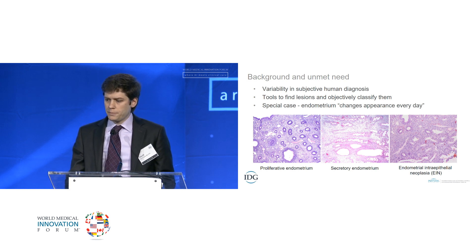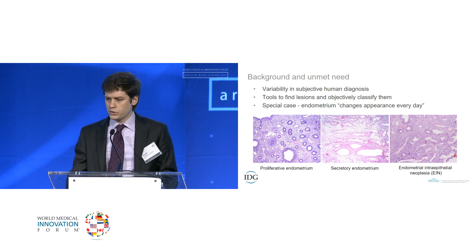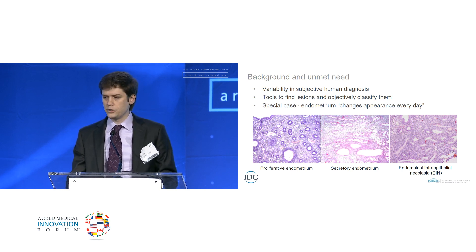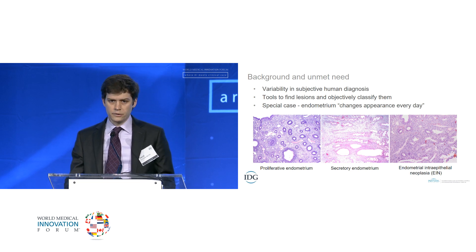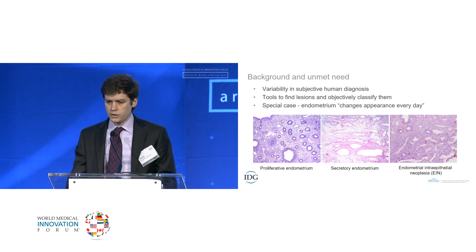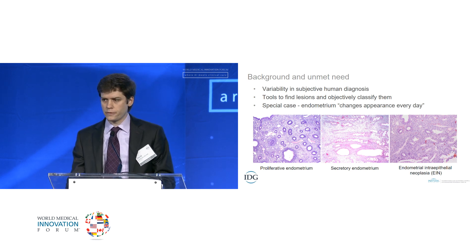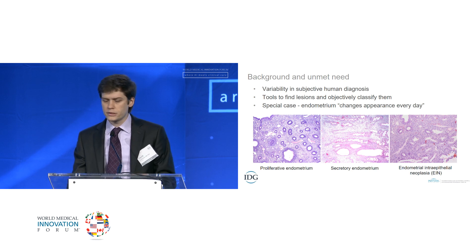This is the type of tool we set out to develop, and we chose as our model system the endometrium. The endometrium has a diagnosis — endometrial intraepithelial neoplasia — which is one of these diagnoses where there's relatively poor inter-observer agreement. It's true that some subspecialists can have kappa values as high as 0.8, but they're relatively lower in general practice.